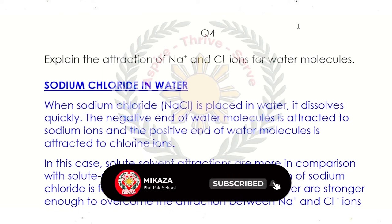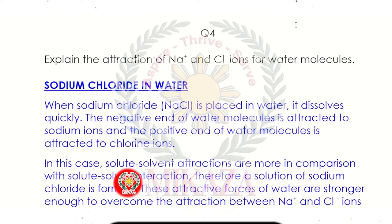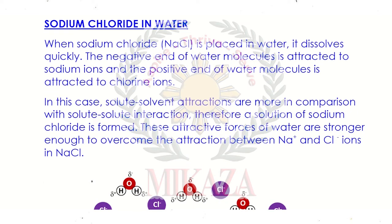Question number 4: Explain the attraction of Na and Cl ions for water molecules. When we dissolve NaCl in water, positive ions and negative ions are present. When we add sodium chloride in water, it dissolves. The negative end of water — the oxygen part — is attracted to the positive sodium ion, and the positive end — hydrogen — is attracted to the negative chloride ion.